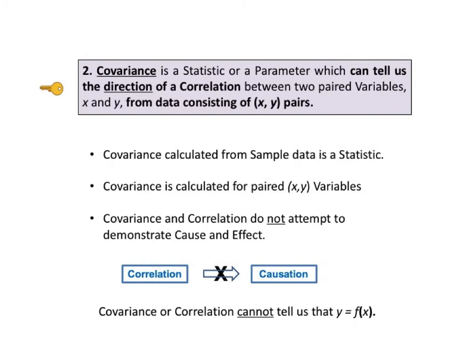Calculating covariance is a first step in calculating correlation. It is important to note that correlation does not attempt to demonstrate cause and effect. That is the purpose of regression analysis, which can be considered to be an extension of correlation analysis. So although we use the terms x and y for the paired variables, the existence of correlation does not mean that y is a function of x.